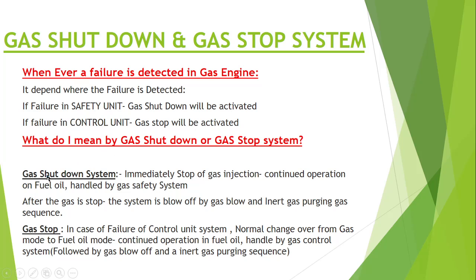Gas shutdown means an immediate stop of gas injection, with continued operation on fuel oil handled by the gas system. After the gas is stopped, the system is blown off by air followed by an inert gas purging sequence. In gas stop, in the case of failure of the control unit, there is a normal changeover from gas mode to fuel oil mode, with continued operation in fuel oil handled by the gas control system, followed by gas blow-off and inert purging sequence.